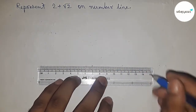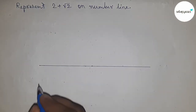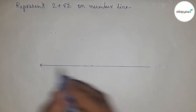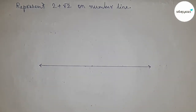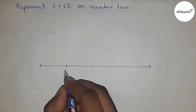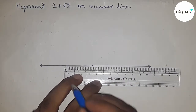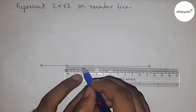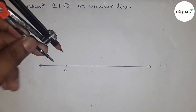First of all, drawing a line of any length and marking the ends with arrows — this represents the number line. Next, this is the starting number zero. Using a scale to write down all the numbers on the line, or we can use a compass.